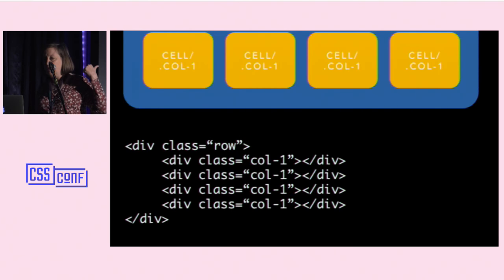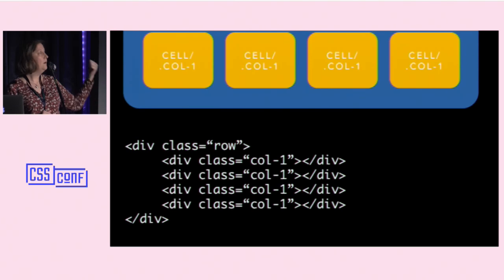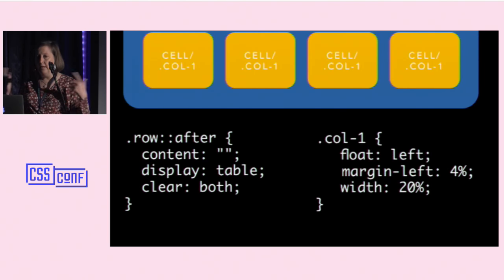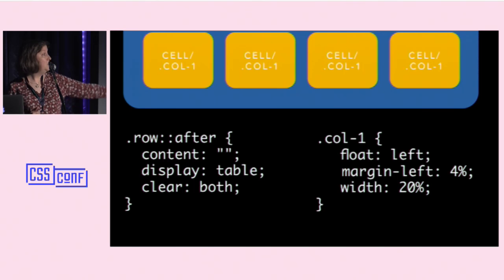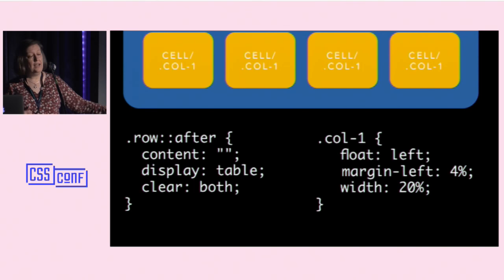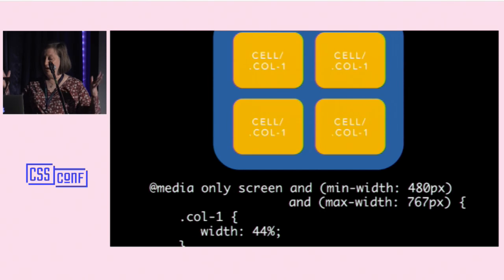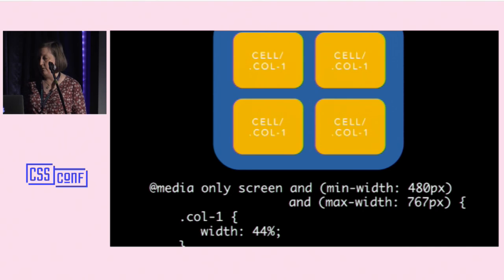If you take a look at the code, it's going to look like this: we've got a row, some cells, some HTML. We're going to write a little bit of CSS to style it — some kind of formula for clearing our rows, floating and widths on our cells. As we start to scrunch the page down, we change our media queries and change around our widths.